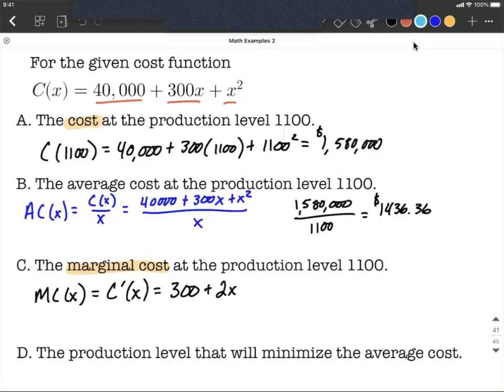Next let's evaluate this at 1100. So we can say our marginal cost evaluated at 1100 as we were asked to do is going to be 300 plus 2 times 1100, which works out to be 2500.